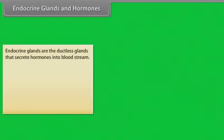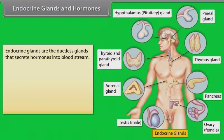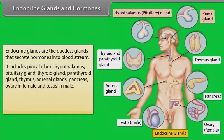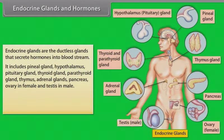Endocrine glands are the ductless glands that secrete hormones into the bloodstream. They include the pineal gland, hypothalamus, pituitary gland, thyroid gland, parathyroid gland, thymus, adrenal glands, pancreas, ovary in females and testis in males.